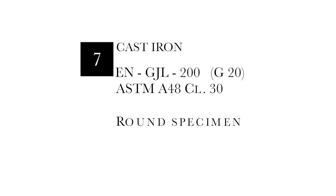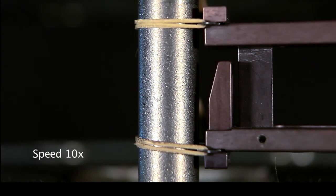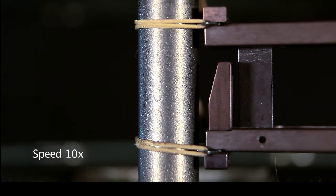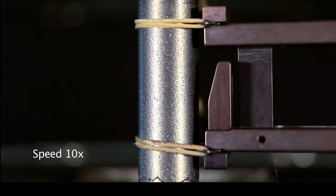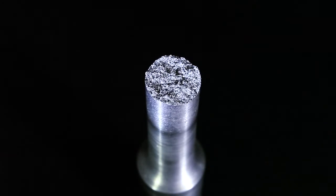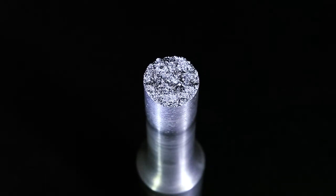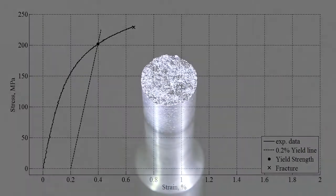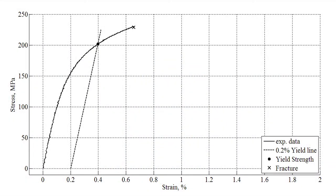Test 7: Grey cast iron. The tensile behavior is remarkably more brittle with respect to the compressive loading.